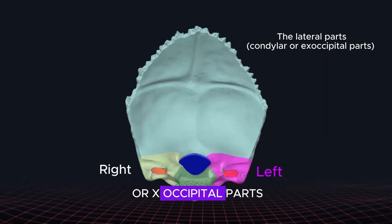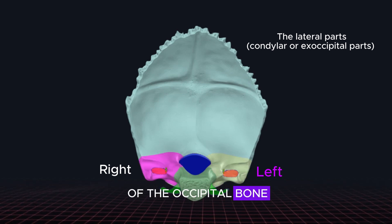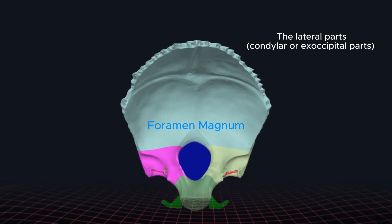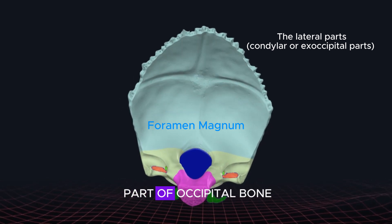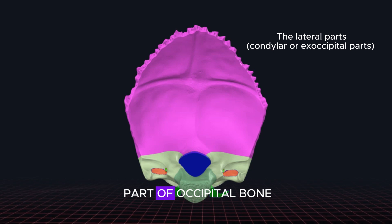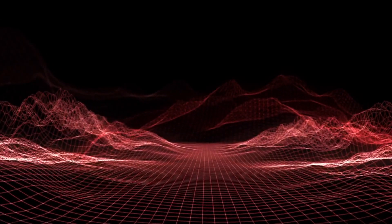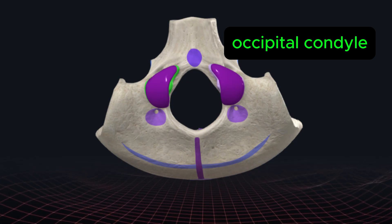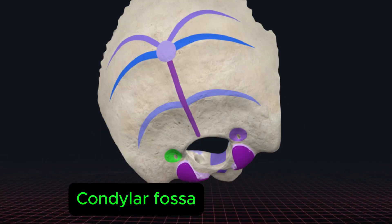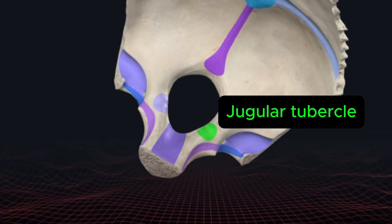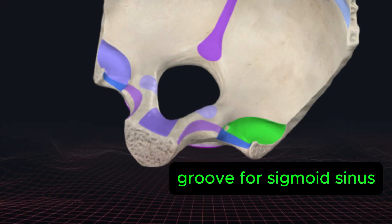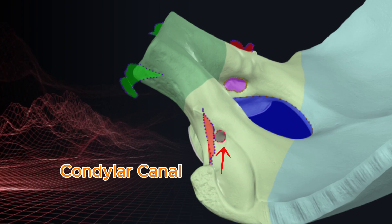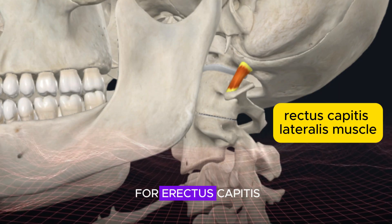The lateral parts (condylar or exoccipital parts) are the two portions of the occipital bone located lateral to the foramen magnum. They are continuous anteriorly with the basilar part and posteriorly with the squamous part of the occipital bone. Each lateral part consists of an occipital condyle, condylar fossa, jugular process, jugular tubercle, inferior portion of the groove for the sigmoid sinus, and hypoglossal and condylar canals.